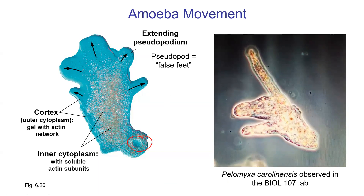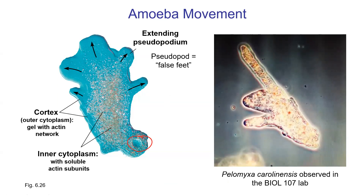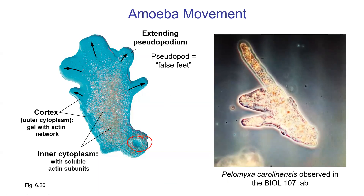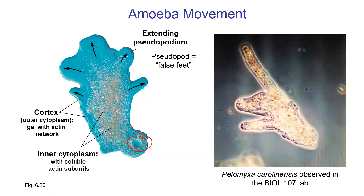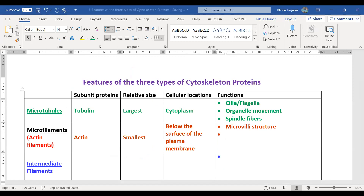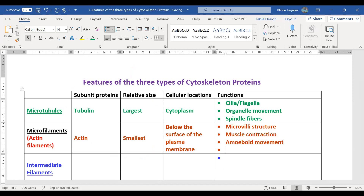There's a textbook image of the amoeba shown in a bluish-turquoise color — you can see what's probably the nucleus, and the cytoplasm loaded with actin subunits. Adding to our notes: muscle contraction and amoeboid movement are two functions of actin. We're not done with actin — it's very versatile.